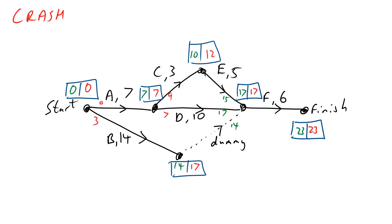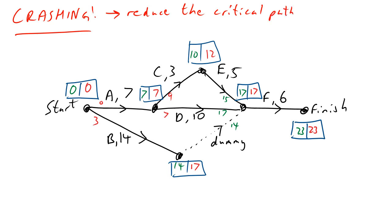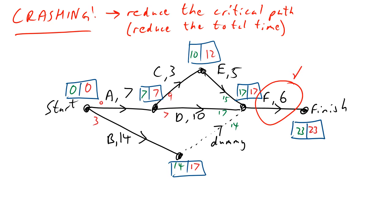Crashing — this is where people normally crash on the exams, but all we're trying to do is reduce the critical path, which means reducing the total project time. We need to make sure we get a bang for our buck — we don't want to reduce things indiscriminately because that can have effects. For example, any change to F is good: F is on all paths, so there's no way to reach the finish without passing through F — any reduction in F reduces the whole project.